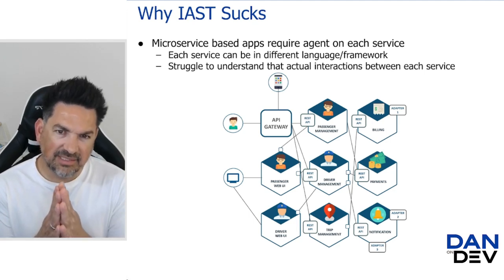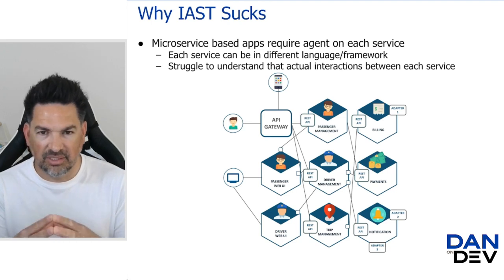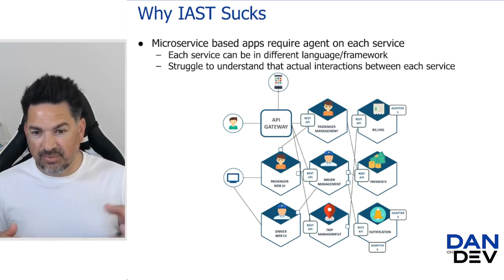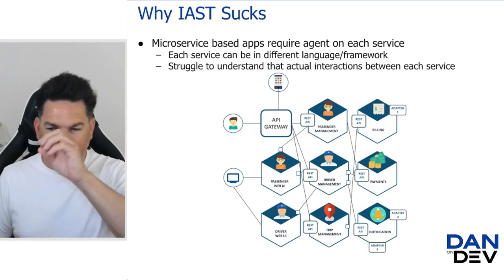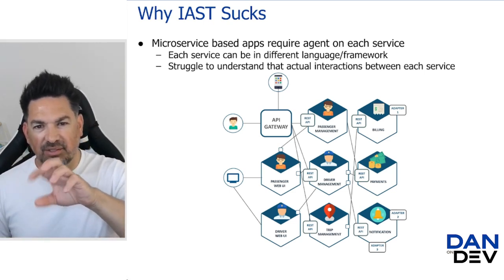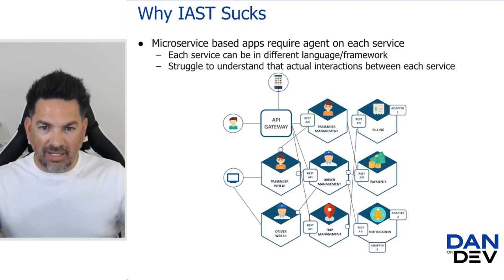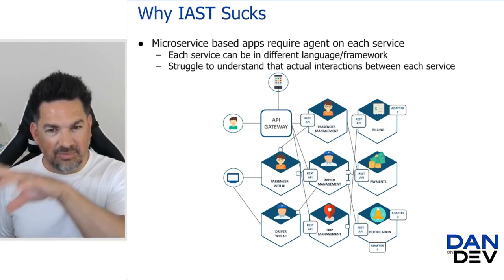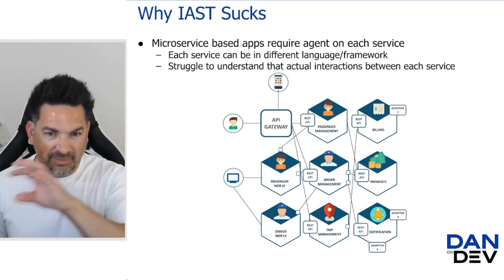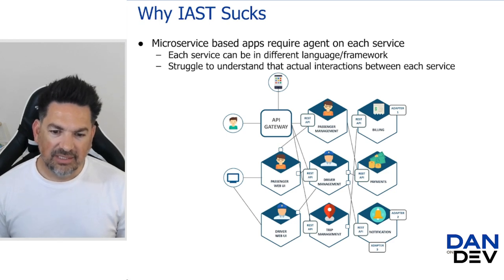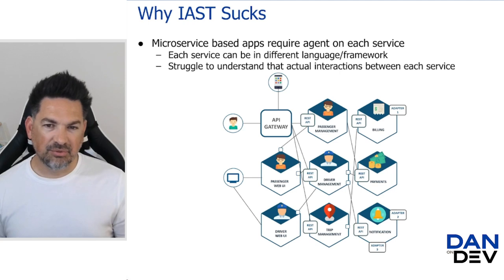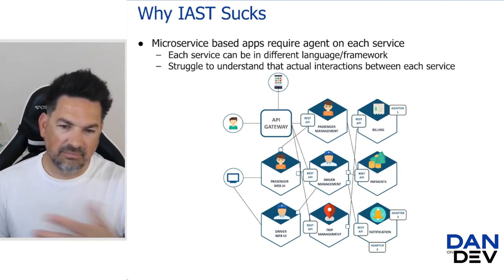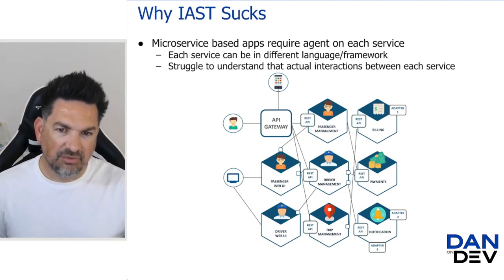The other challenge is the way people build applications now is starting to cause an issue for IAST, because you have a bunch of microservices. Companies are building a whole bunch of little pieces that cobble together to become one app. So you have to be able to get the instrumentation on each layer or each little microservice, and that becomes a challenge. If you're not developing that way, if you're not building in microservices models, then IAST may be fantastic for you. Again, this is just so you're aware — this is not beating up on anybody. All these categories of products are going to have their challenges.